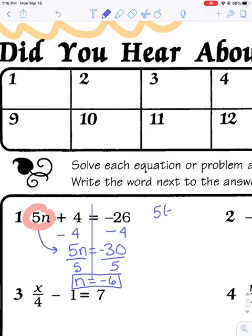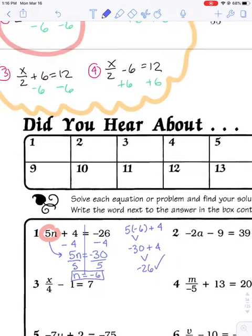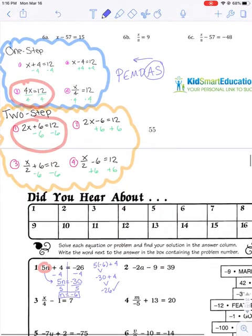If I wanted to check it, it would work out. 5 times negative 6 plus 4. When you're checking, you have to do regular order of operations. You're not working backwards. You're not solving algebra. That's negative 30 plus 4. And yep, that's negative 26. Pause the video and see if you could try number 2 on your own. Unpause the video when you're ready to go over it.